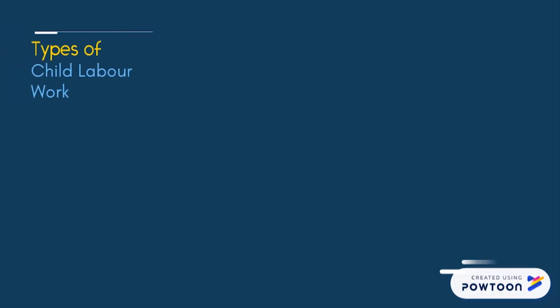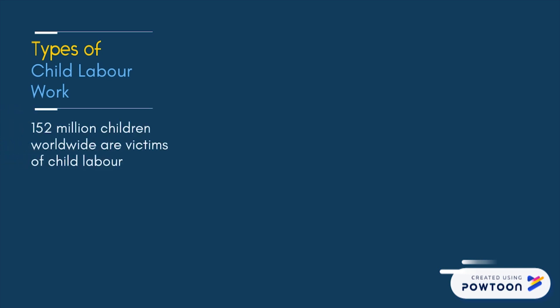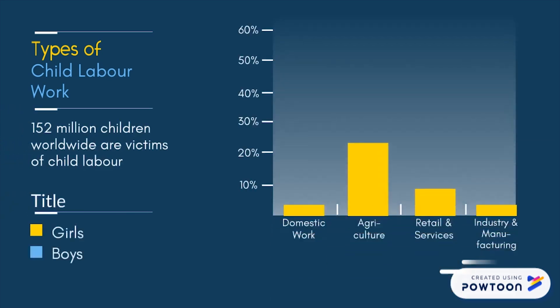Types of child labor work include domestic work, agriculture, retail and service, and industry and manufacturing, among others. Statistics show that about 152 million children of both genders worldwide are victims of child labor.